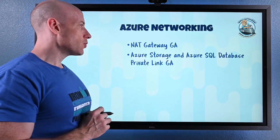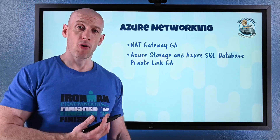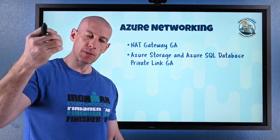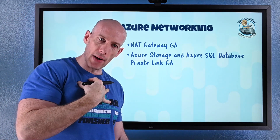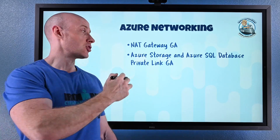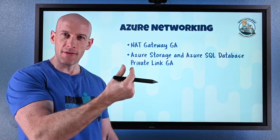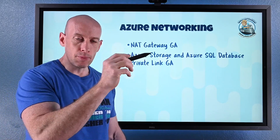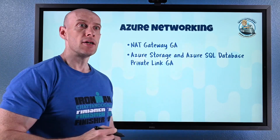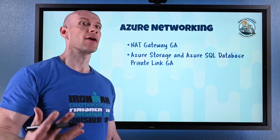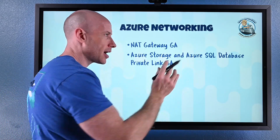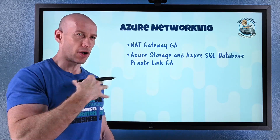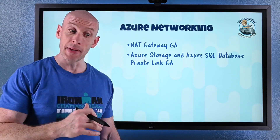Azure Storage and Azure SQL Database are now GA for Private Link — the ability to have an endpoint for those services projected into my virtual network. I can then access the service via that IP within my virtual network with no public endpoint required. I can use that endpoint even from connected networks, so if I have ExpressRoute or site-to-site VPN, I can get to my storage account or Azure SQL database through that IP in my virtual network.